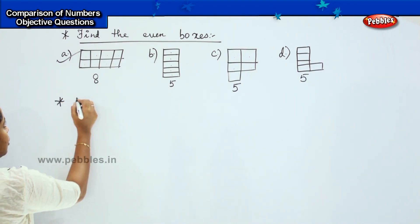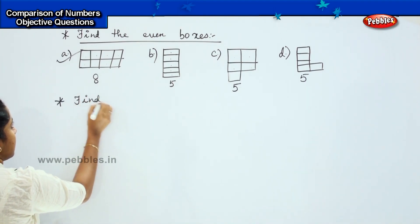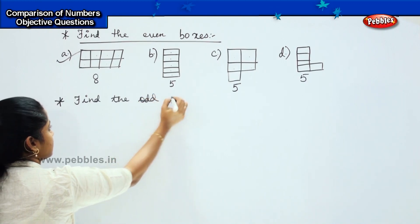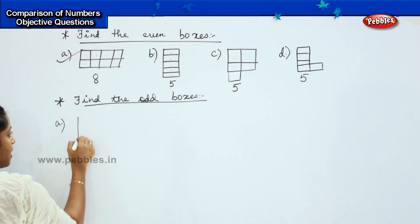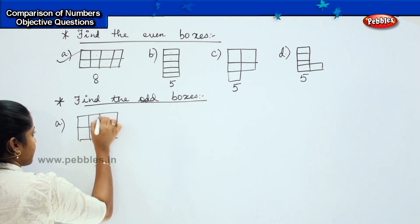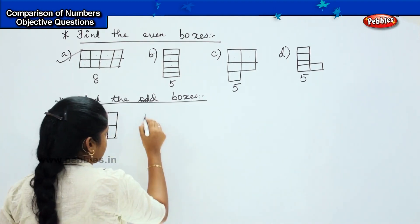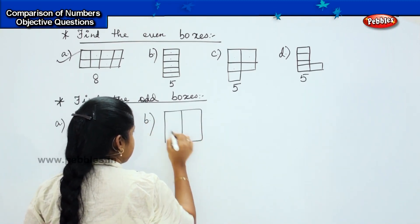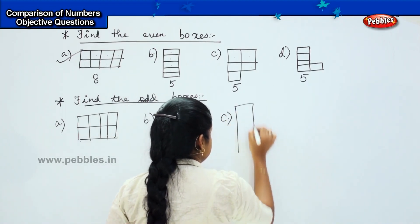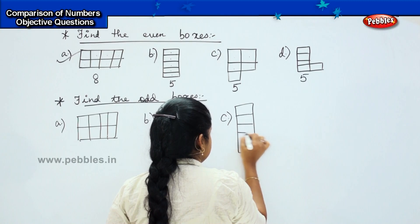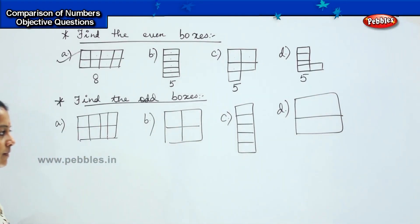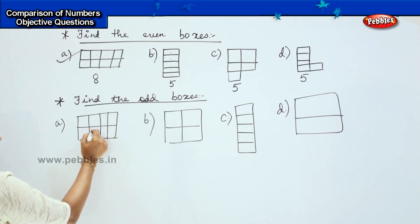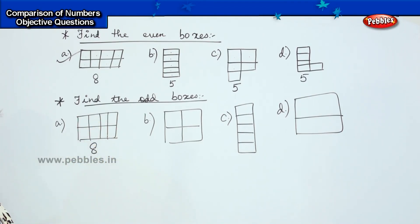Now the next question: you have to find the odd boxes. Your options are option B, option C, option D. Shall we count the number of boxes? 1, 2, 3, 4, 5, 6, 7, 8. Is 8 an odd or even number? It is an even number, so this is not my answer.